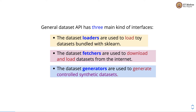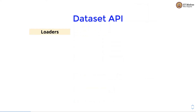sklearn provides a general dataset API that has three main kinds of interfaces: the dataset loaders, the dataset fetchers, and the dataset generators. The dataset loaders are used to load toy datasets bundled with sklearn. Datasets on the internet which are large and not bundled with sklearn can be accessed using dataset fetchers, which download and load these datasets from the internet. So we have loaders, fetchers, and generators.